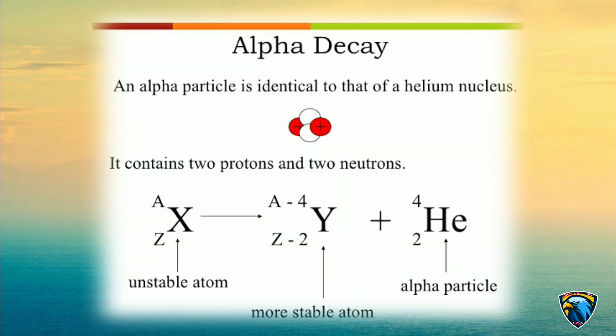Alpha Decay: An alpha particle is identical to that of a helium nucleus. It contains two protons and two neutrons.